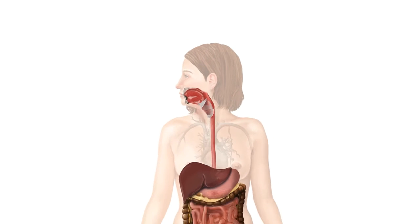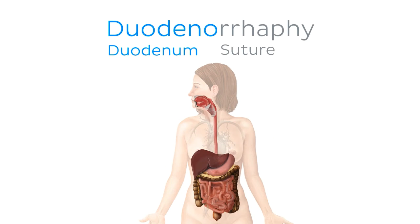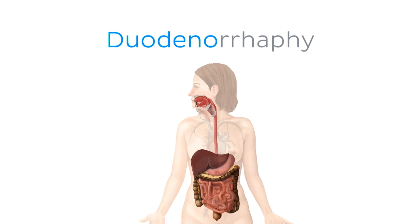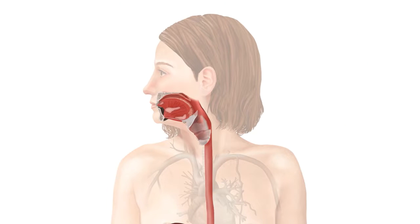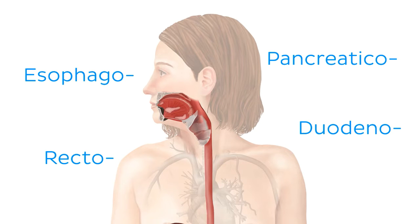As always, we're going to be tackling the terminology here by learning about the smaller word parts which come together to form larger, more complex terms — talking of course about the roots, prefixes, and suffixes of digestive terminology. Luckily for us, many of the word parts we're going to see today are similar to the names of the various parts of the digestive tract, so you shouldn't find it too difficult.